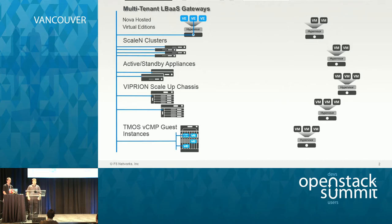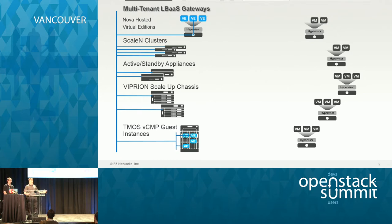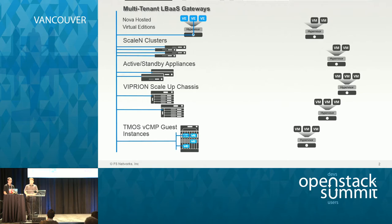Sometimes we have customers whose operations have had active standby Big IPs forever. Sometimes you need scale up. If you think about load balancing, the scale out of the pool makes sense to everybody — you connect to a VIP and scale out to a bunch of pool members. But what happens when you need to scale up the VIP?